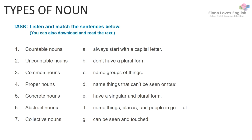Common nouns name places, people and things in general. Concrete nouns are physical things — things you can see and touch. In contrast, abstract nouns can't be seen or touched. For example, conditions, ideas and qualities.